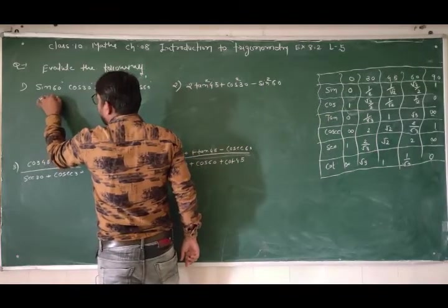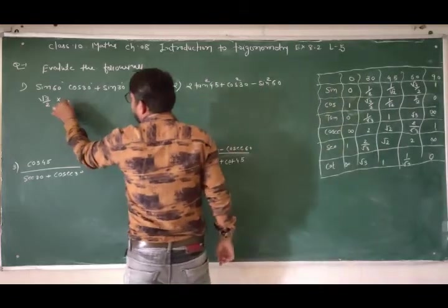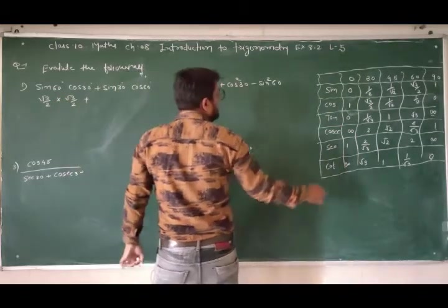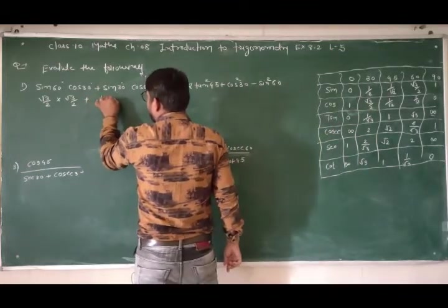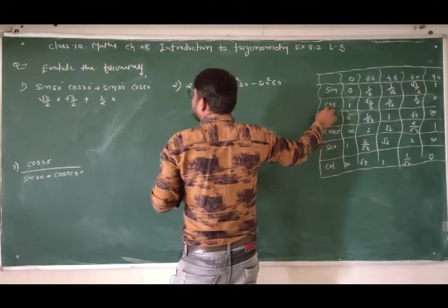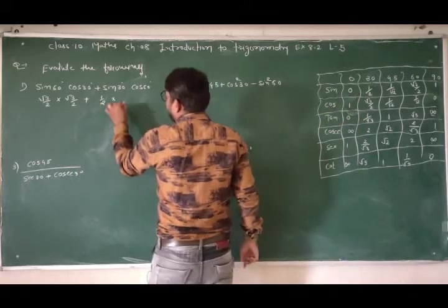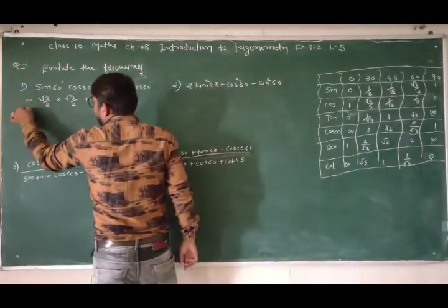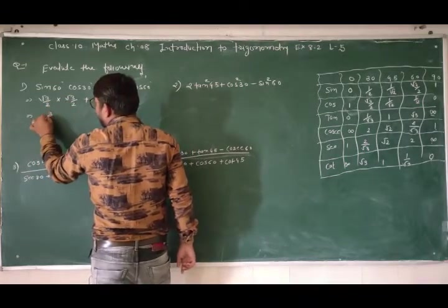sin60 = √3/2, into cos30 = √3/2. Then sin30 = 1/2 — friends, this table you have to remember, I will make a video for this — into cos60 = 1/2. Now first multiply: √3 × √3 = 3, and 2 × 2 = 4.